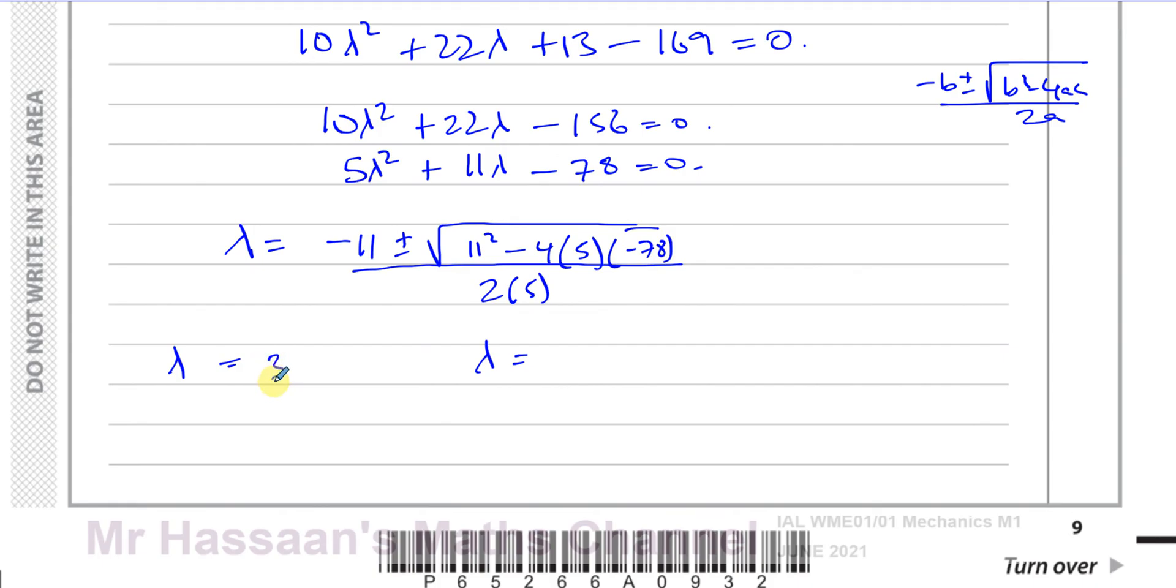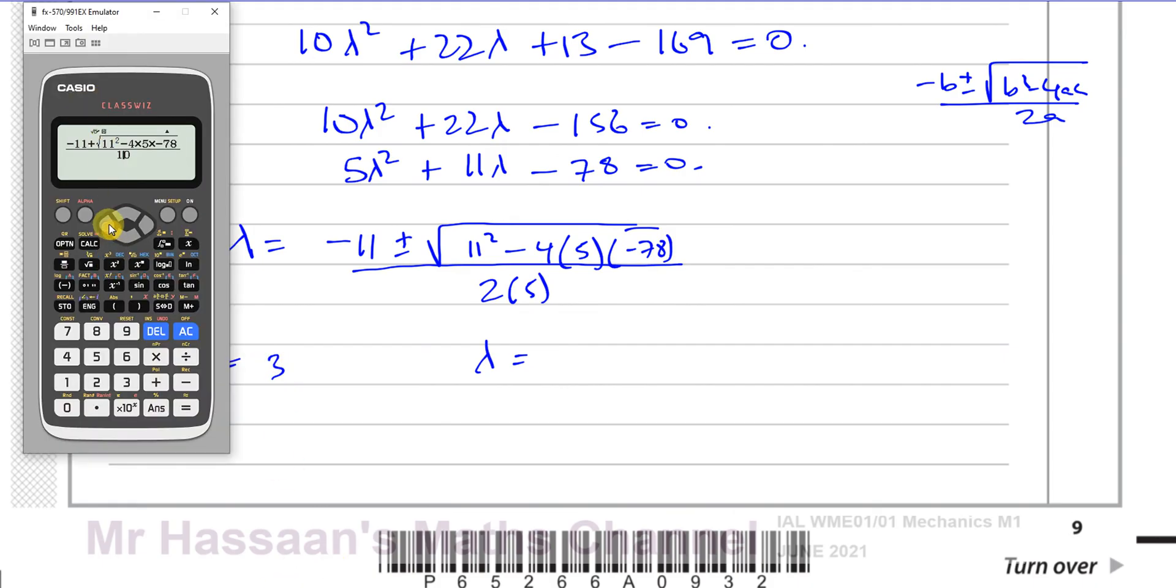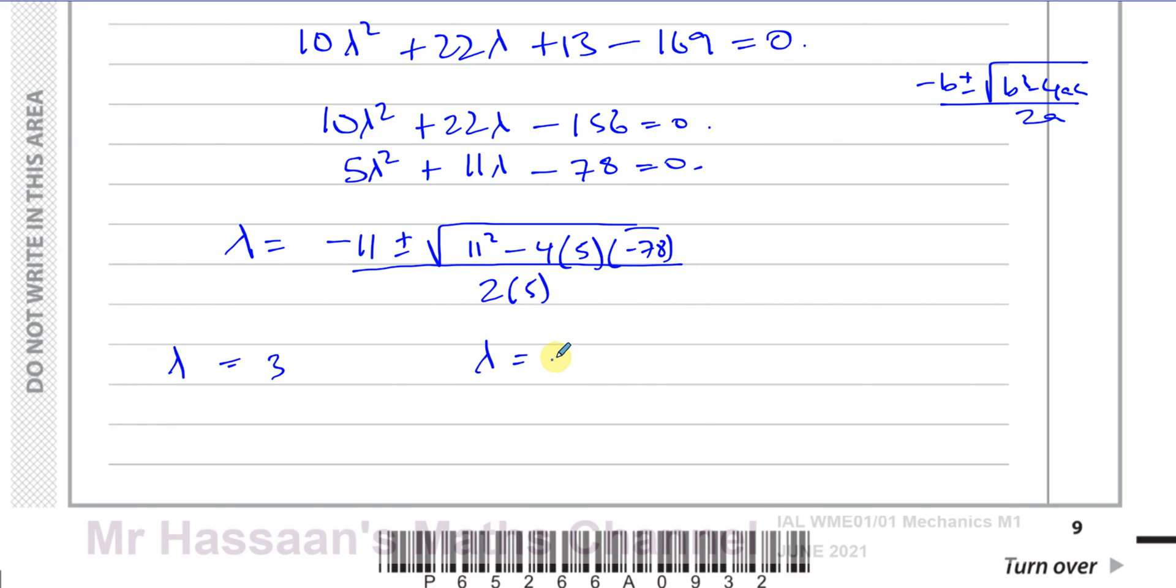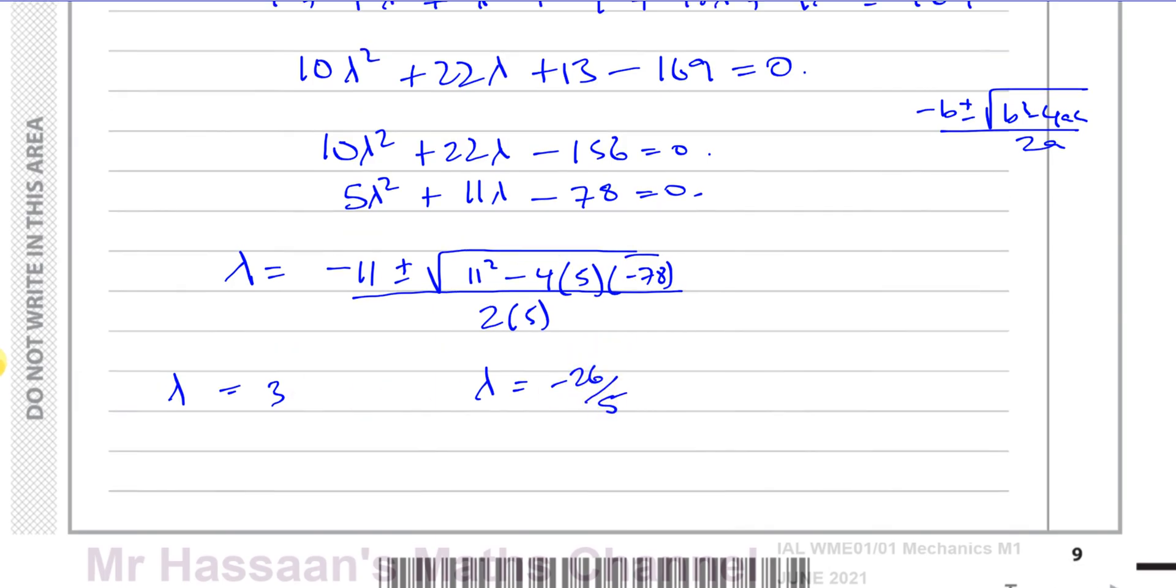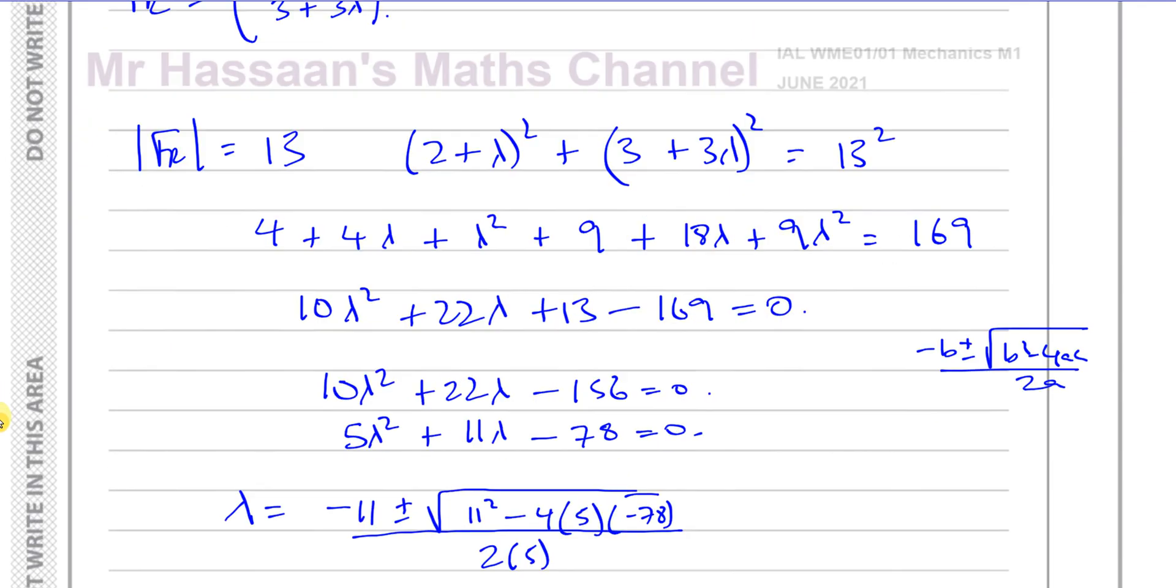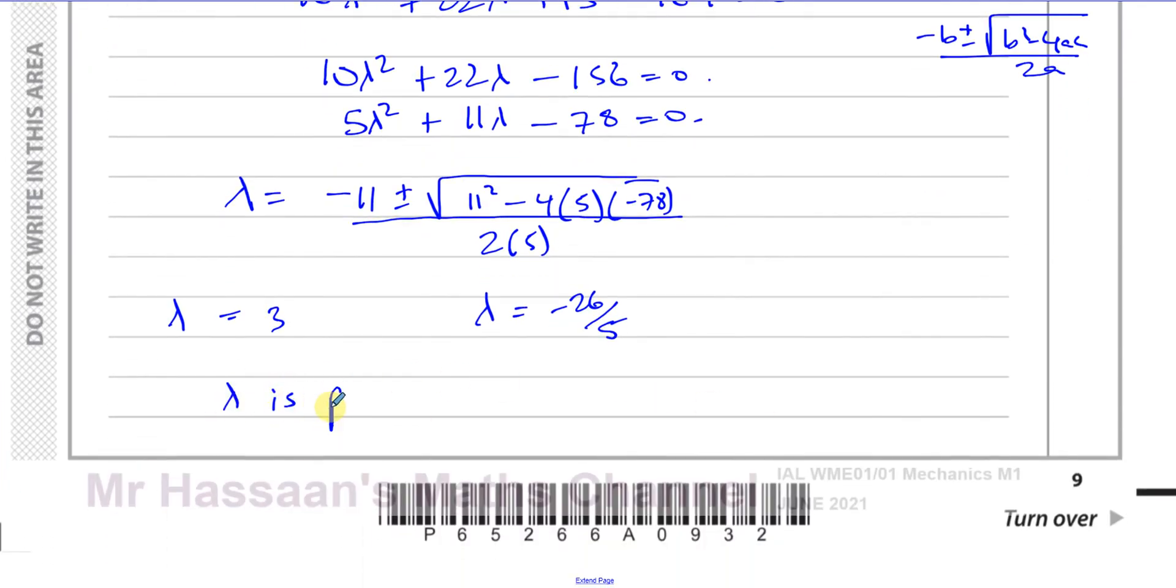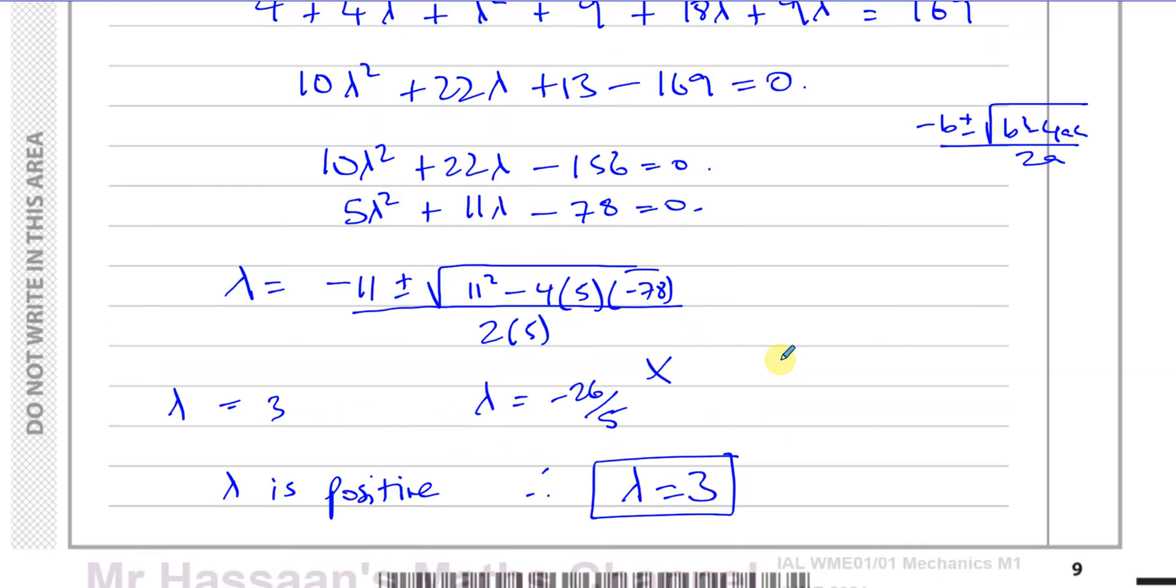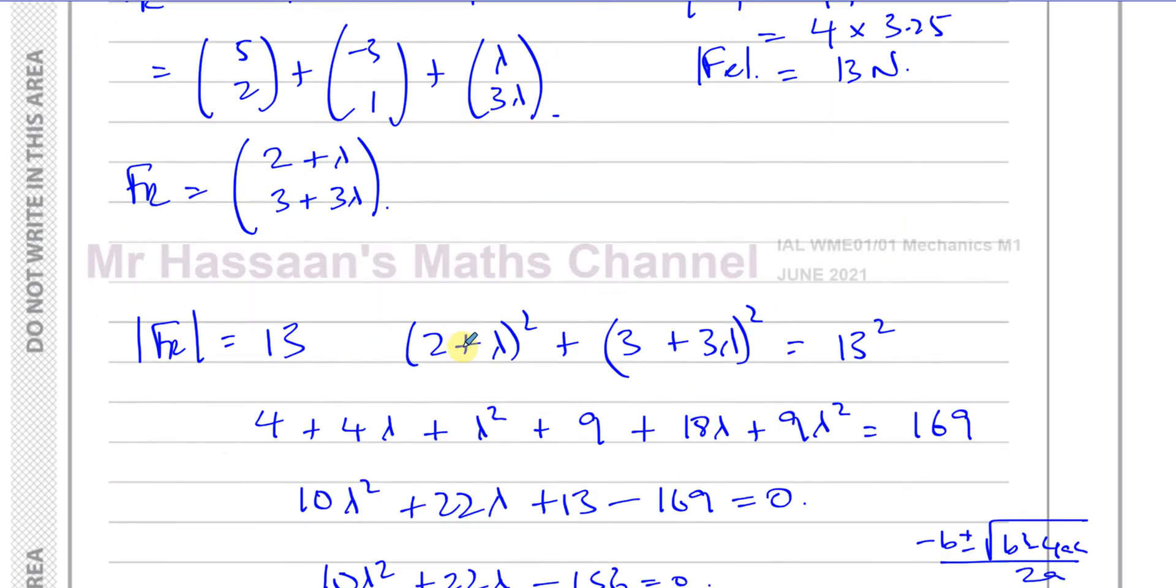So it says lambda is a positive constant, so therefore lambda is positive, therefore we're going to use lambda equals 3. We will not take this value. You should make a statement to show the reason why you've chosen lambda equals 3, because it's positive. Don't just put a little cross next to this, you should write a little statement. There's one value of lambda, and that's the positive value.